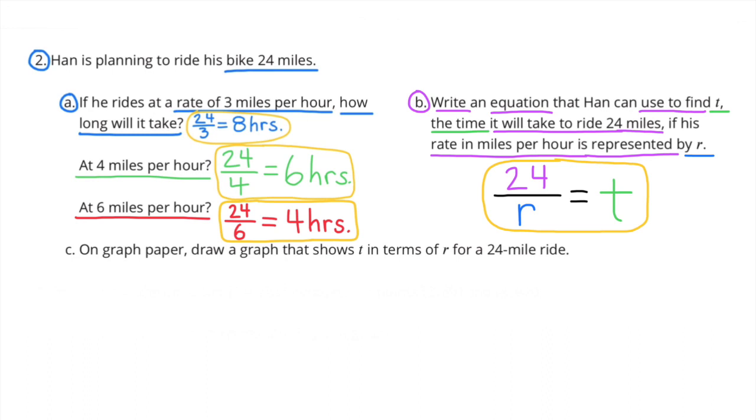B. Write an equation that Han can use to find T, the time it will take to ride 24 miles, if his rate in miles per hour is represented by R. So in this case, it would be 24 miles divided by R, because R represents the rate in miles, and that will equal the time. So 24 divided by R equals T.